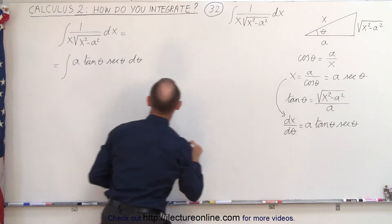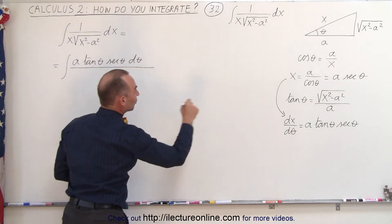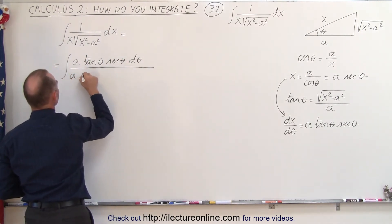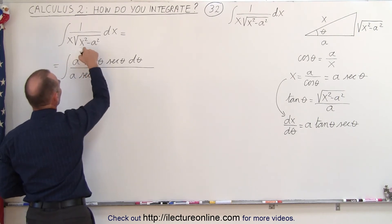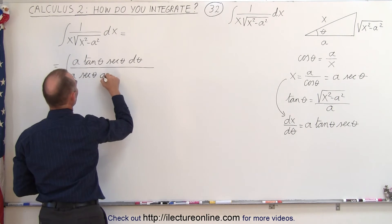when we move the d theta over to the other side, divided by x in the denominator, which is a secant of theta. And the square root of x squared minus a squared can be written as a times the tangent of theta.